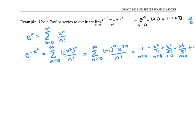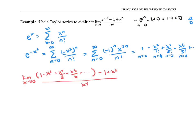Now I'm going to substitute that series into the limit. Notice that the 1 in this Taylor series is going to cancel with the negative 1 in the other part of the limit, and the negative x squared from the Taylor series is going to cancel with the x squared. That leaves me with the limit of x to the 4th over 2 minus x to the 6th over 6 plus higher powers of x, all divided by x to the 4th. Now I can factor out an x to the 4th from the numerator and cancel it with the x to the 4th in the denominator.